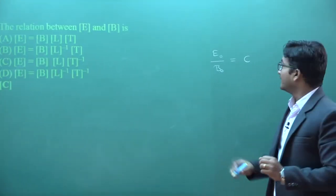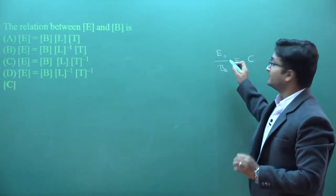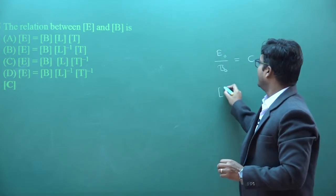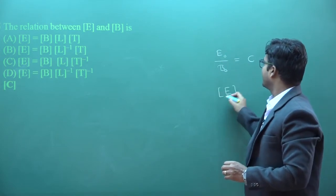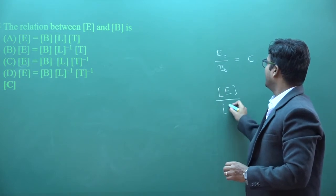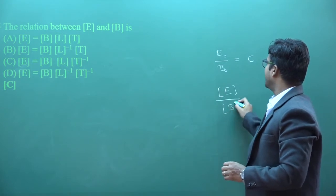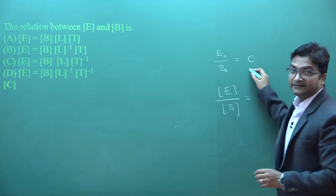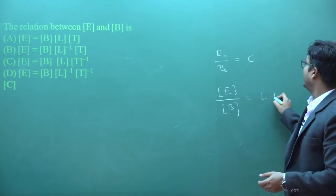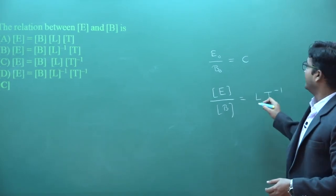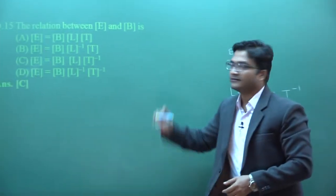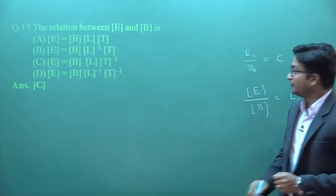Converting to dimensions: the dimension of E equals dimension of B multiplied by C. Since C is speed, its dimension is L T⁻¹. So the relation between dimensions of E and B involves the factor C, dimension L T⁻¹. The answer is C.